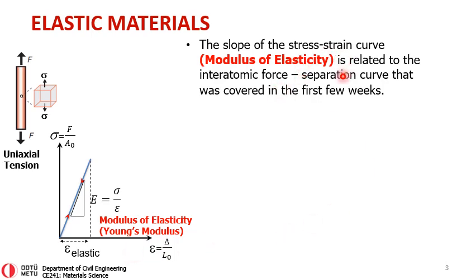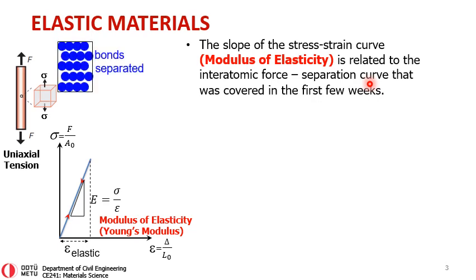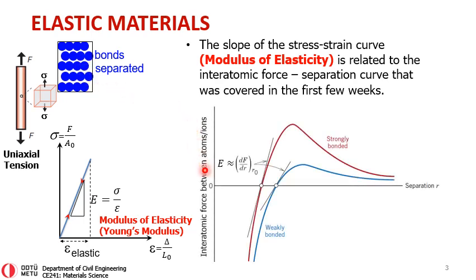So the slope of this stress-strain curve is related to the interatomic force-separation curves that we covered in the first few weeks of this course. If you remember, as you pull, these bonds — atoms, ions, or whatever they are — will be separated. And if you were to plot the interatomic force between atoms or ions versus the separation curve, you can have such behavior for a strongly bonded case. The slope of this curve at the equilibrium point is related to the modulus of elasticity.